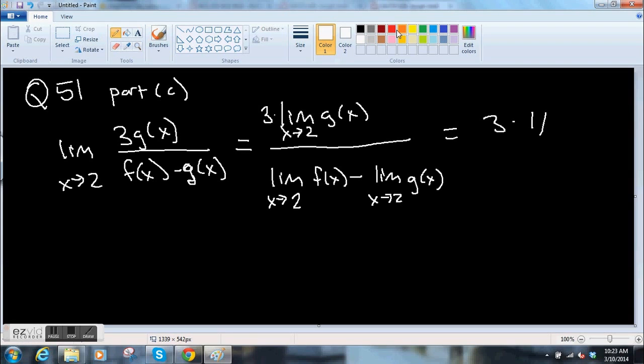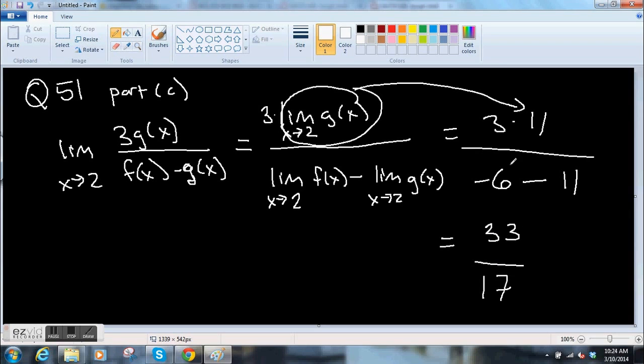Equals 3 times 11. 11? Where did 11 come from? That's g of x there. All divided by limit of f of x goes to 2 was negative 6. We found that in part A. Minus 11. So that turns out to 33 over 17, and the whole thing is negative because that was negative 17. So negative 33 over 17.